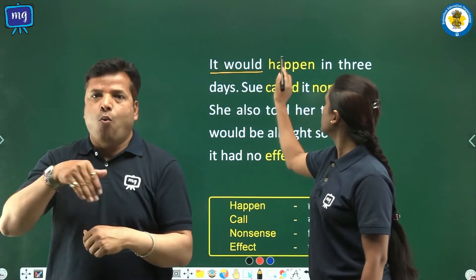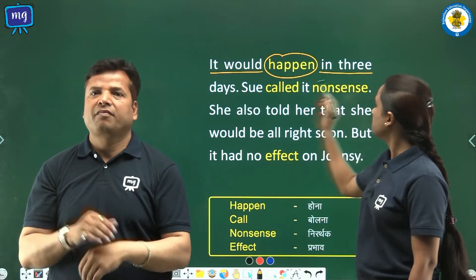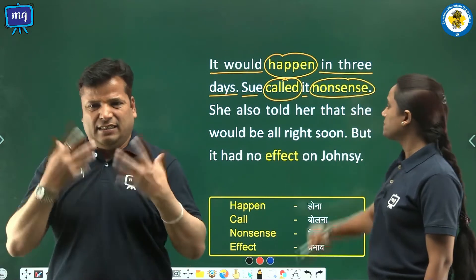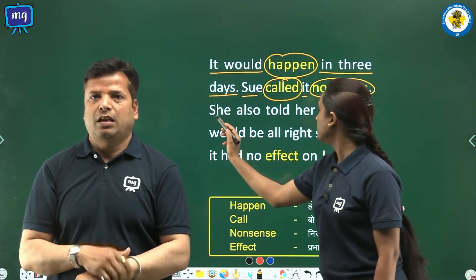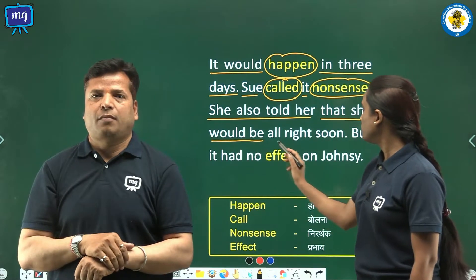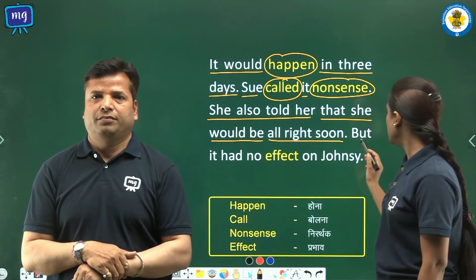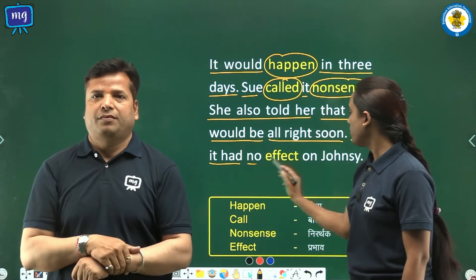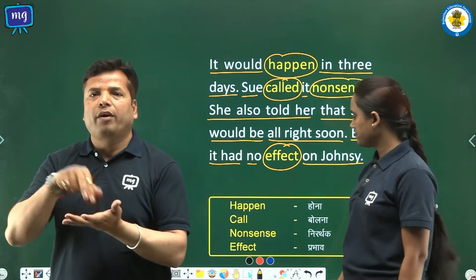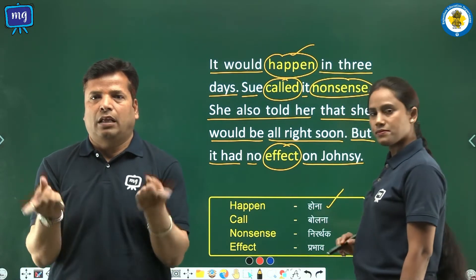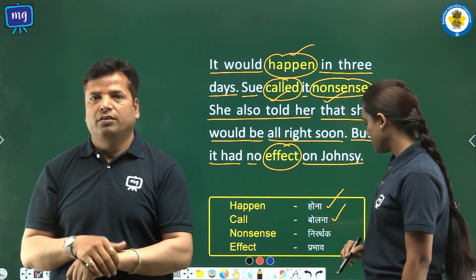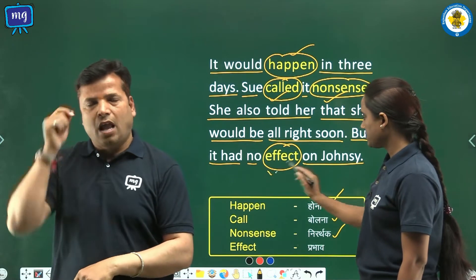It would happen in three days. Sue called it nonsense and told her that she would be alright soon, but it had no effect on Johnsy. Word meanings: happen — hona, call — bolna, nonsense — nirarthak, effect — prabhav.